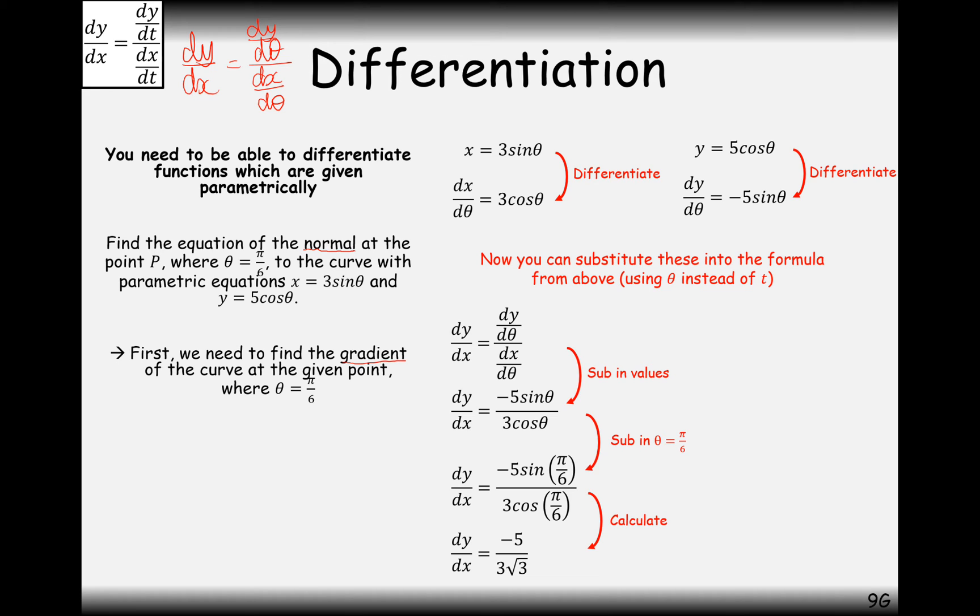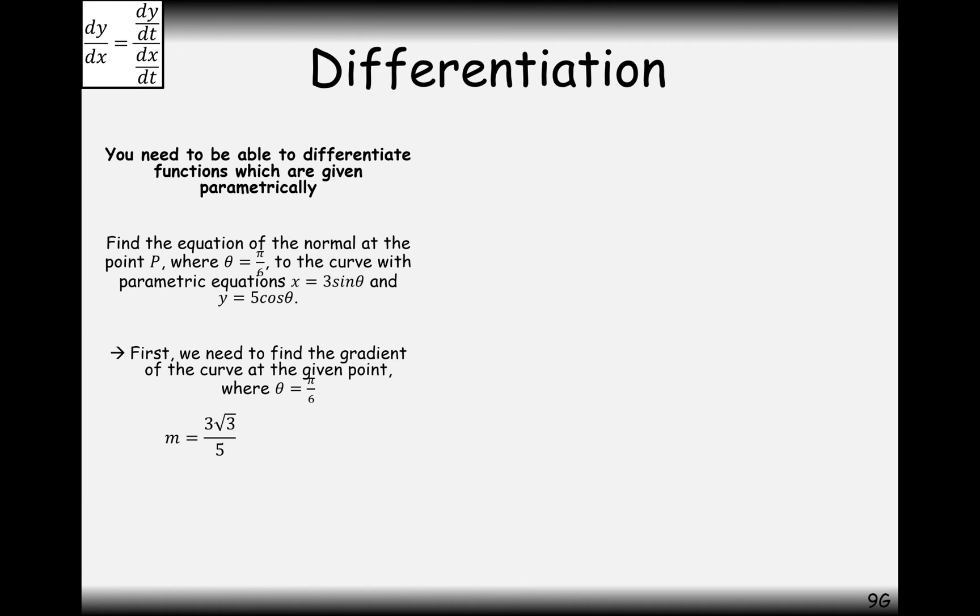We're not after the gradient. We're after the equation of the normal. So then the equation of the normal is going to be the flipped negative. So it's going to be 3 root 3 over 5. It's a negative here so it will turn into positive over here. So we've now got the gradient of the normal. Now what we're looking to do is substitute to y equals mx plus c into this.